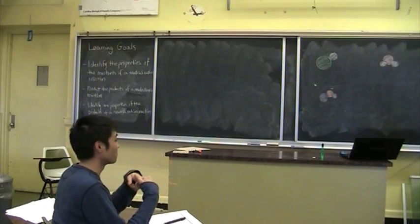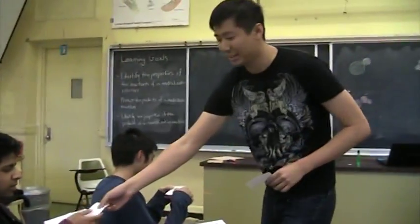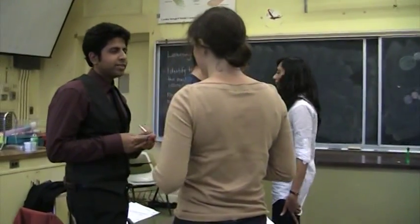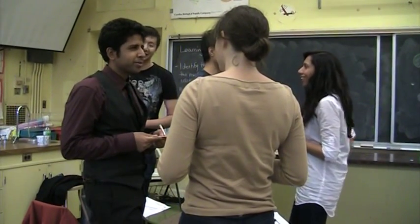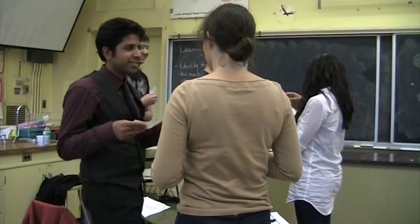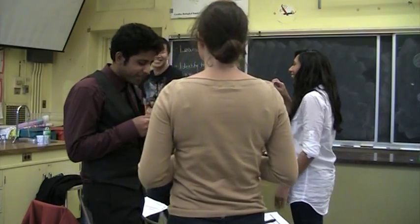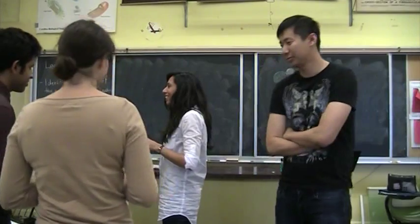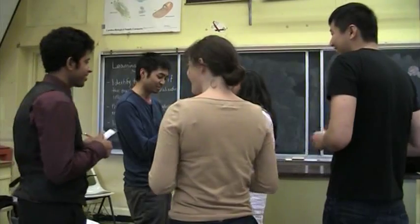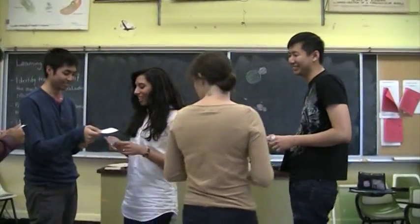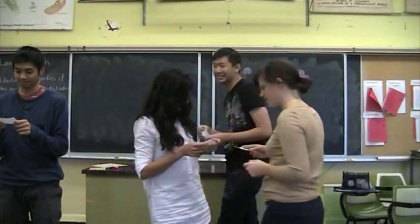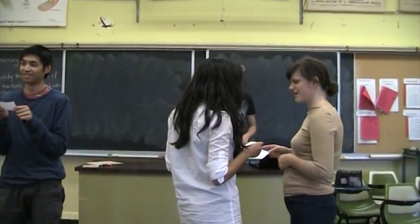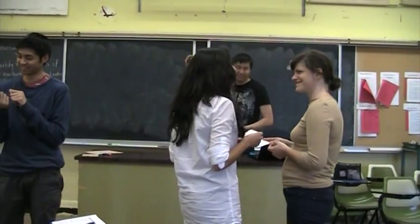I'm going to hand out the cards now. We have one minute because we're short on time today. You may begin. [During the activity, students discuss:] What is a pH of 7? That's neutral — that's the level of water. The concentration of H₃O⁺ equals the concentration of OH⁻. Okay class, I think we have enough time. Awesome.